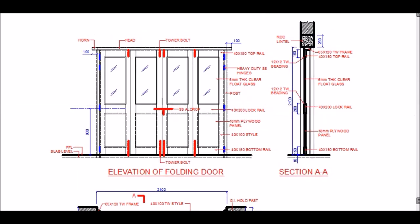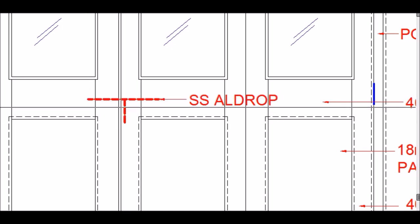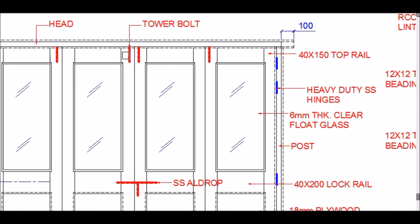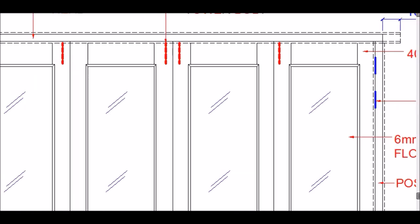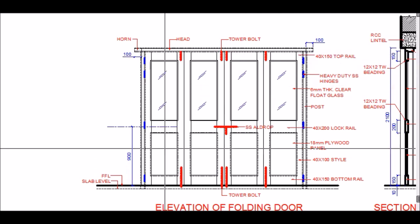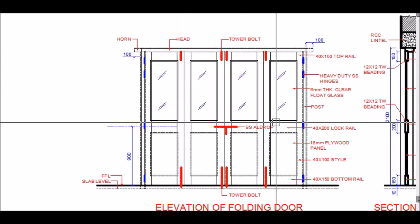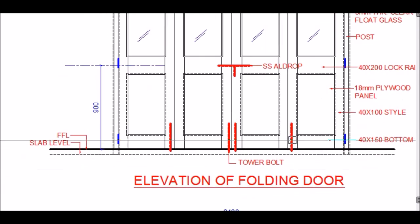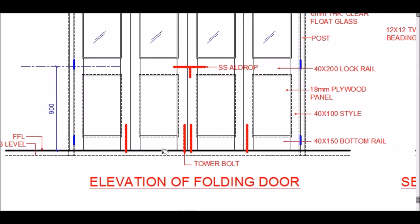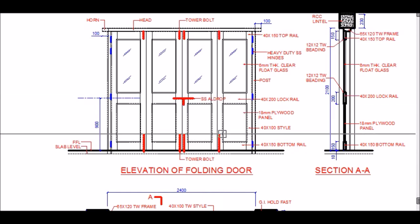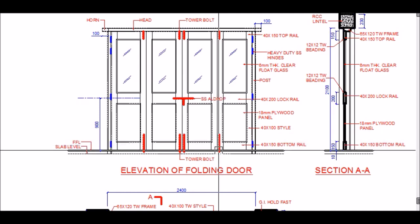The door hardware includes: an SS Uldrop (stainless steel floor drop) at the center of the door; tower bolts at the top — two on each side — to keep the outer shutters fixed so only the two central shutters need to be opened; and tower bolts at the bottom as well. The bottom tower bolts are purposefully made slightly longer so users do not need to bend too far to operate them.